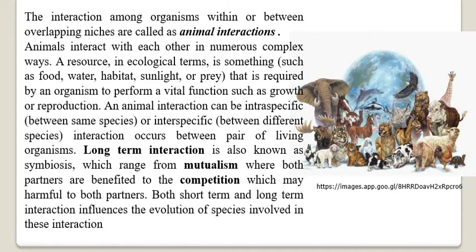Some animals live independently in their natural habitat, seeking their own food and utilizing free water and oxygen for their metabolic processes. A niche — that is the habitat or locality where they survive — includes the physical space in which they live, how they use the resources present in that space, and how they interact with one another. The interaction among different organisms within or between overlapping niches is called animal interaction.